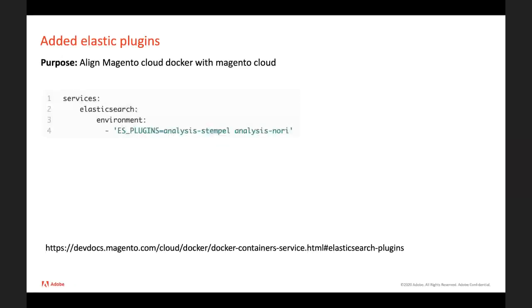We also added Elasticsearch plugins support. The goal of our Cloud Docker is to emulate cloud environments, so when possible we try to support the same way to configure settings. On cloud-native environments, users are able to add Elasticsearch plugins, so we added the same ability in Docker and kept almost the same way to configure it. You should add the needed plugins into magento/services.yaml and build-compose will automatically add the plugins into the Docker Compose file — the same as it works on our cloud. By default some plugins are enabled, but you can add any custom plugin.